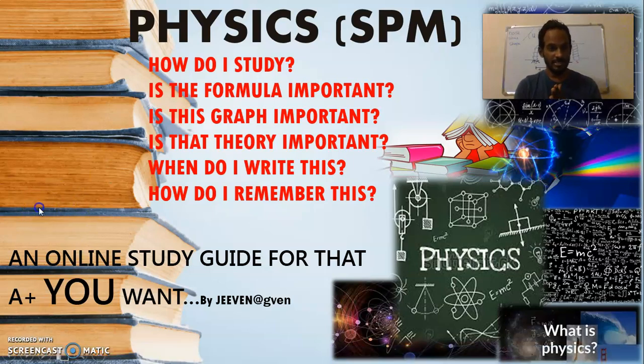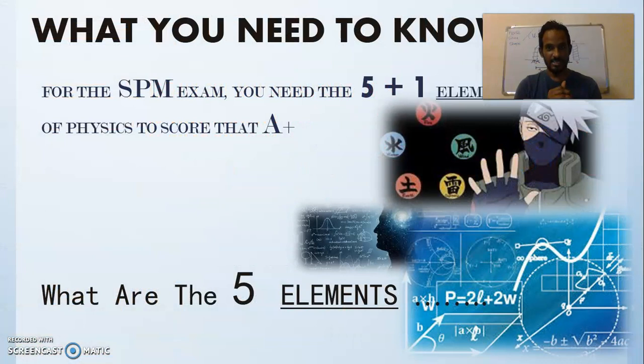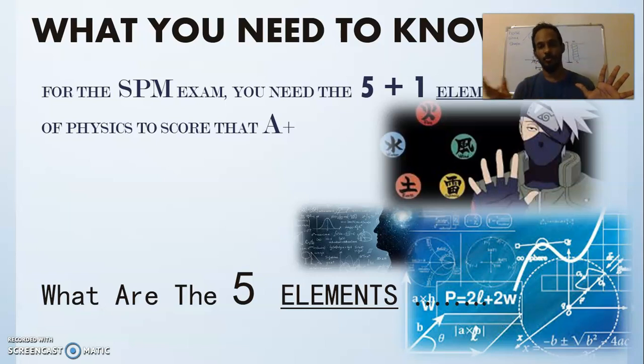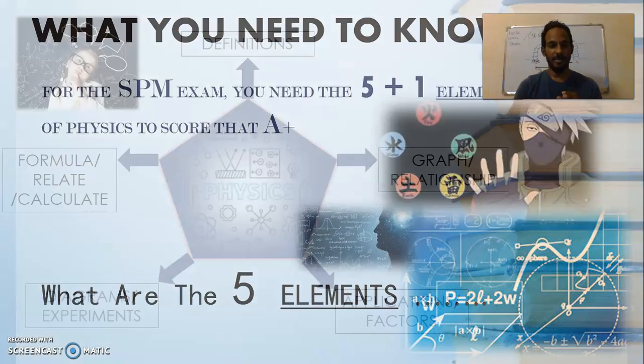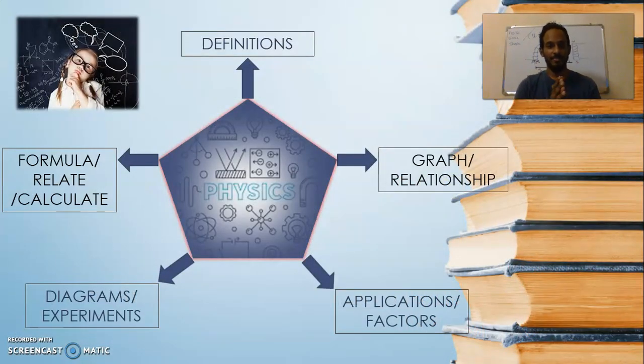Now, in order for the first, what you need to know for the SPM exam: you need what I call five plus one elements of physics to score that A+. I'm not an Avatar fan by the way, I just like that five elements thing. So what are these five plus one elements?